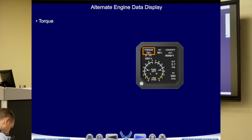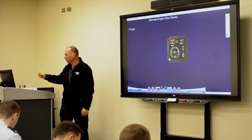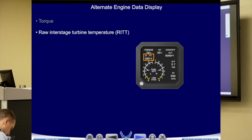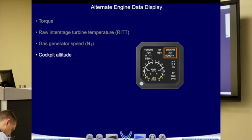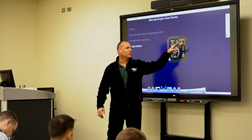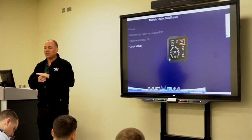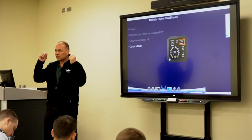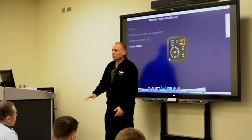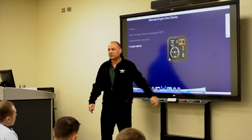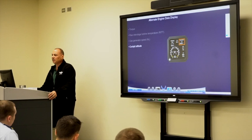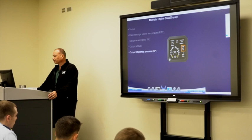The alternate engine data display. Just like the primary had the big round dial for torque, we have a digital readout for the same torque setting. We also have raw ITT — not processed by the EDM — and N1. Additionally there's cockpit altitude: pressurization begins at 8,000 feet, so at 10,000 feet this should read 8 or your cabin isn't pressurizing. There's also a delta P — pressure differential between outside pressure and inside the cockpit — and fuel flow in pounds per hour.